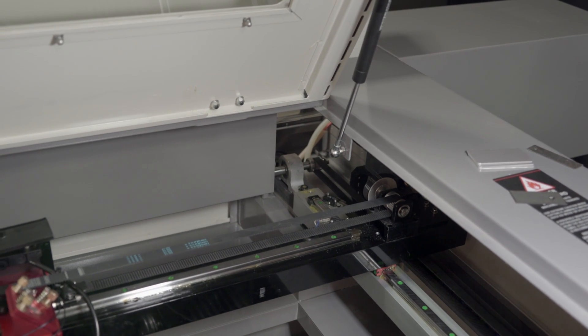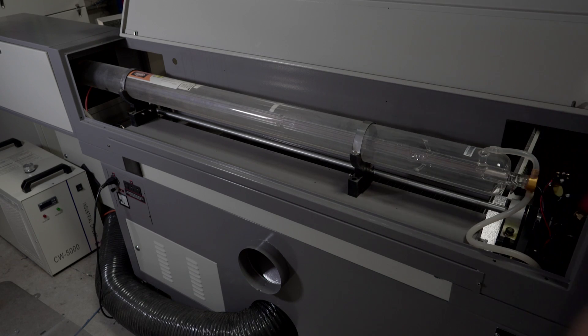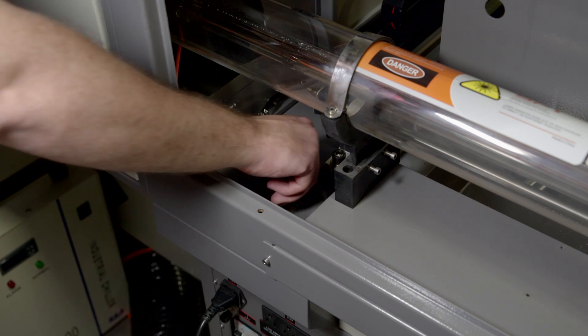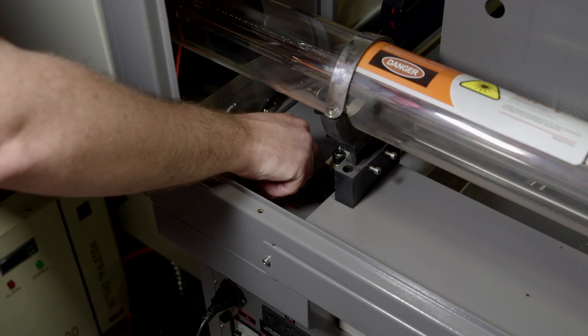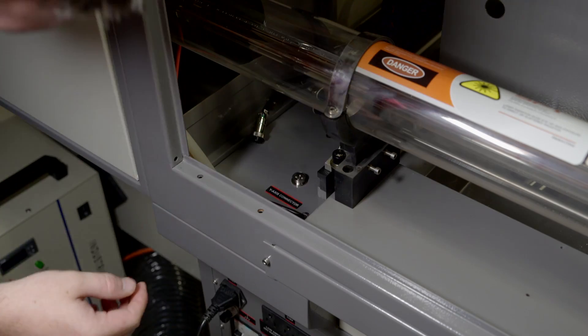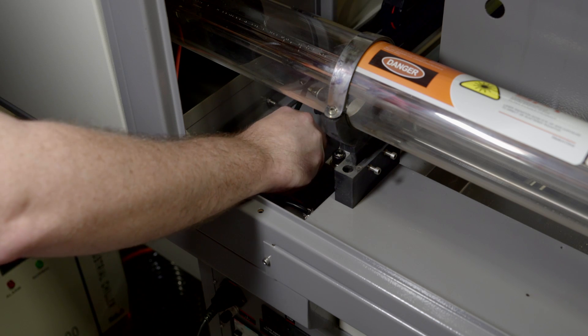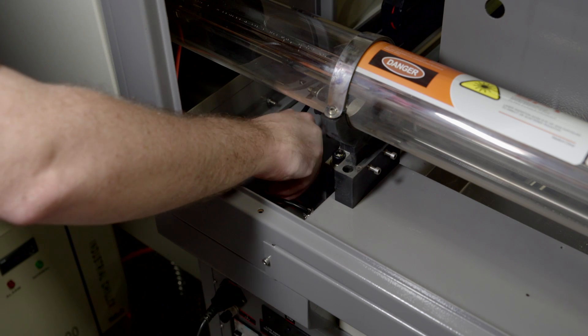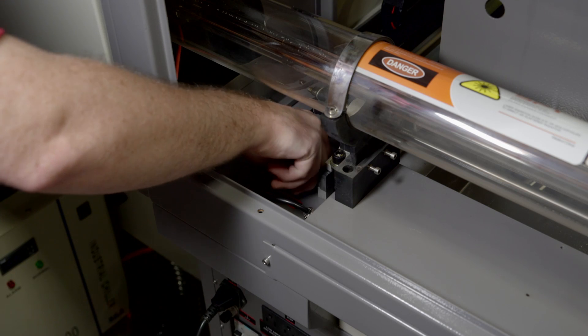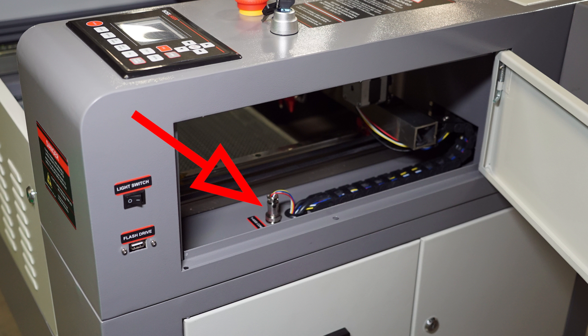Open up the back of your machine where the tube is located. On the left side you will see a plug with a label that says Y-Axis Connector. Unplug this and replace it with the rotary cable. If you have a 1416, the Y-Axis connector is on the right side of the machine as shown here.